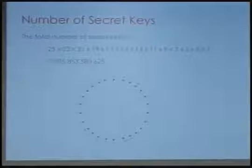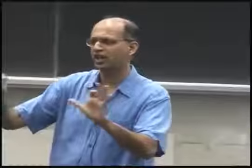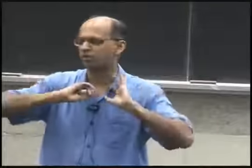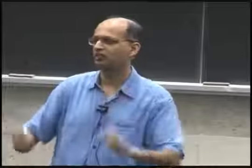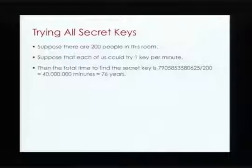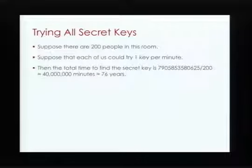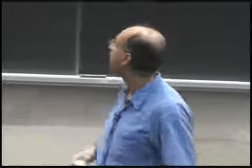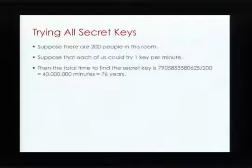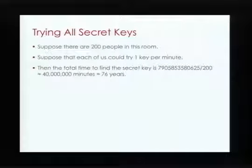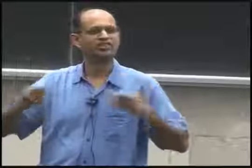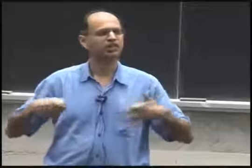That's a lot of keys. Suppose there are 200 people in this room each trying a portion of the keys at a rate of one per minute. With 200 people working together and 7 trillion keys to try, that works out to about 40 million minutes — which is about 79 years, and that's without bathroom breaks. So it would take us 79 years working together using exhaustive key search. Clearly a useless strategy.